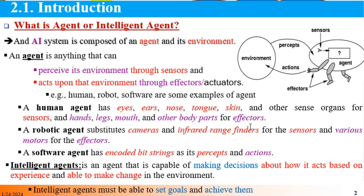The agent is anything that can perceive its environment through sensors and act upon that environment through effectors. This is the definition of the agent.